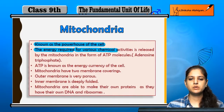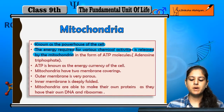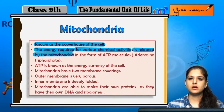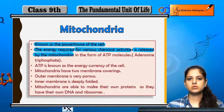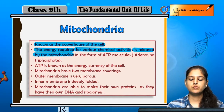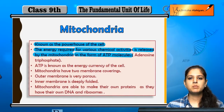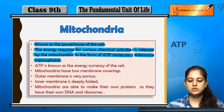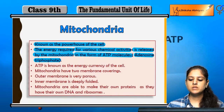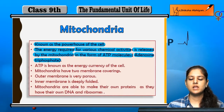Because the energy required for various chemical activities is released by mitochondria. Jo energy chahiye hoti hai chemical activities ke liye, woh mitochondria release karta hai ATP molecules ki form mein — ATP matlab adenosine triphosphate. Is form mein energy release karta hai, isliye isko cell ka powerhouse kaha jata hai.